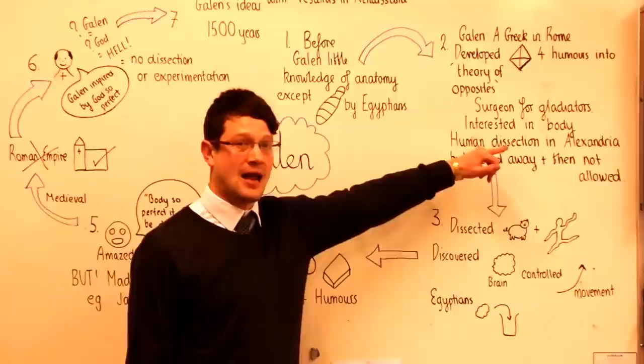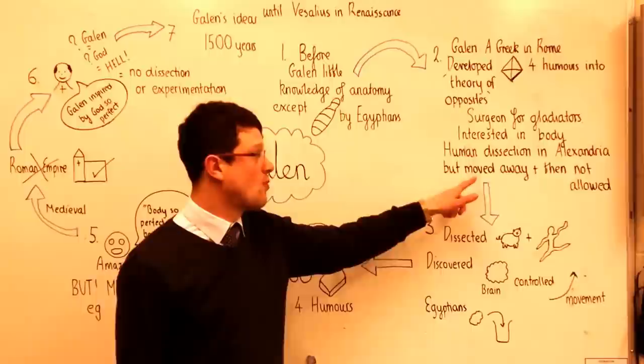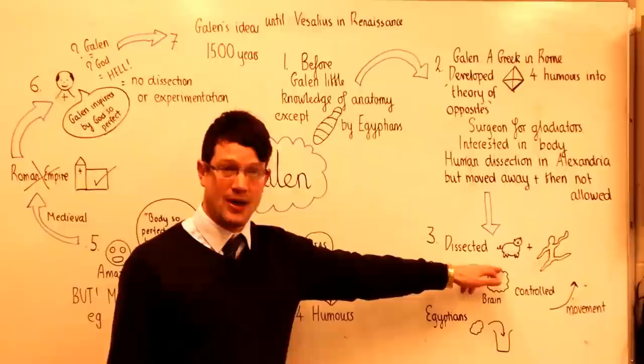He also got the opportunity to do a human dissection in Alexandria, which was a city in the Roman Empire in which that was allowed. He then moved away and was not allowed to dissect humans after that point.